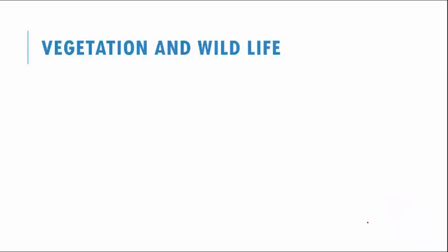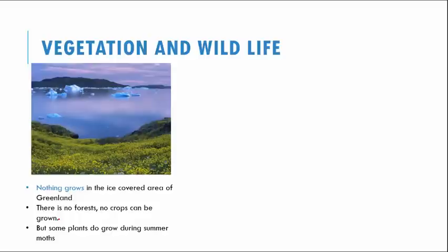When you look at vegetation, nothing grows in the ice-covered areas of Greenland. There is no forest, no crops, and really nothing can be grown. But during some summer months, a few plants do grow — some of the plants that grow are sage, cotton grass, and lichens. But otherwise, it is pretty barren. In the summer, you can see ice floating and some grass cover on the land.